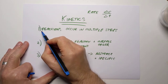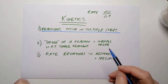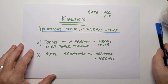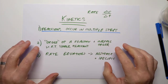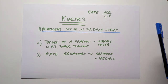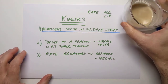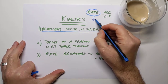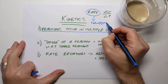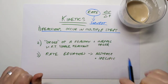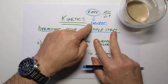Reactions tend to occur in multiple steps. Now, if you have, say, three steps in a given chemical reaction, then those three steps can have different speeds. There will logically be a fastest step, there will be an intermediate step speed-wise, and there will be a slowest step.